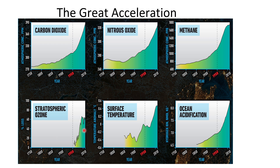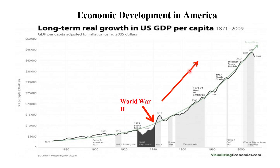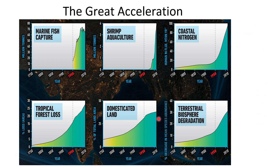Let's look at another graph — similar story: forest loss, marine fish capture, and so on. So what happened in the 1950s? Well, the war ended — World War II ended around 1944 — and after that we stopped killing each other and started developing our economy. So this is the trade-off. We see this environmental disaster, but what did the world get out of it?